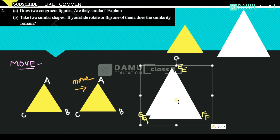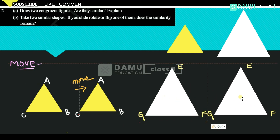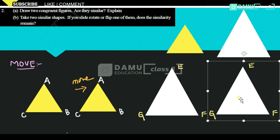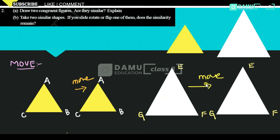Moving the second shape from one place to another — is there any change in shape? No, no change in shape. All the vertices, all the angles remain the same. In the movement, you will not get any changes.